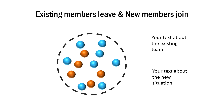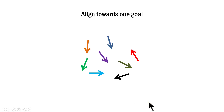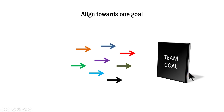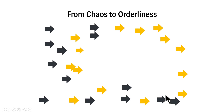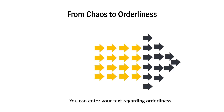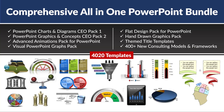There are also concepts on leadership. One template shows aligning towards one goal — arrows are scattered representing different objectives, then a common team goal comes in and drives alignment so everybody works in one direction. Another example shows going from chaos to orderliness — arrows are all over the place, then on a click everything aligns and orderliness is achieved. All these custom animations are already done and available as templates in the Comprehensive All-in-One PowerPoint Bundle.